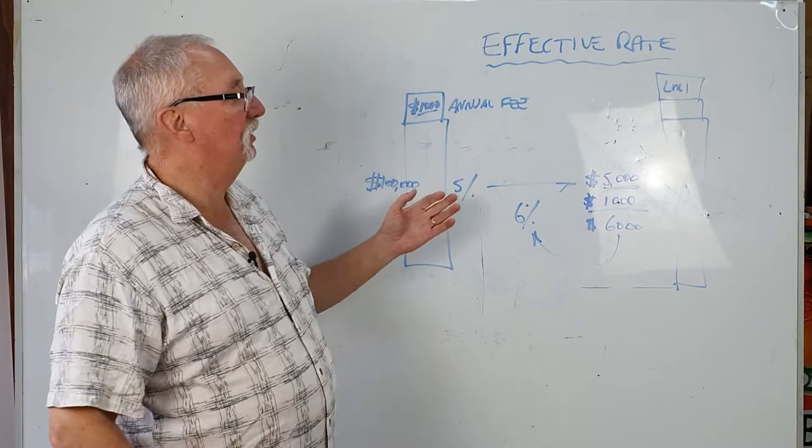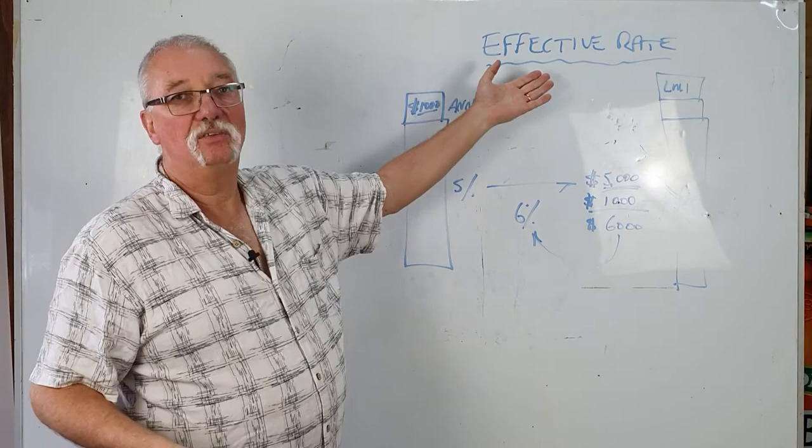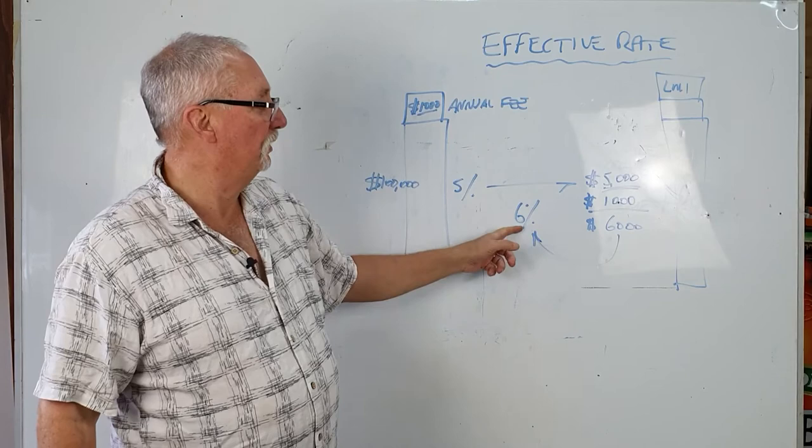Effective rate of interest - something you should ask a broker or your lender. What is the effective rate? Or, if they won't tell you, make sure that you get all the costs involved so that you can come up with a number that tells you whether your investment is generating the return that you think you should be making.